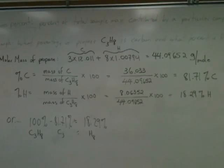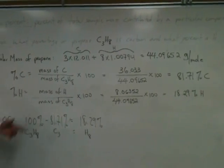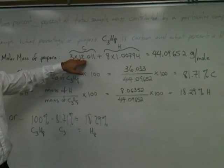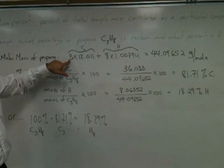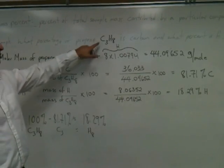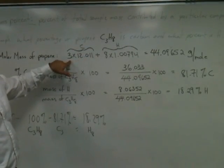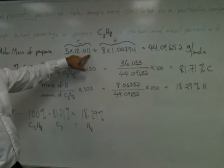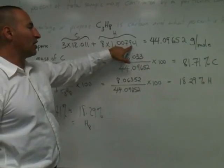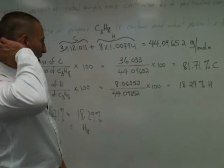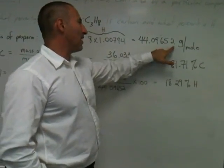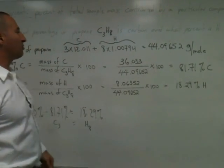First thing we have to do is find the molar mass of propane. We find that by multiplying the molecular mass of each atom by the number of atoms in the molecule. Propane has three carbon atoms, and each of them weighs 12.011 grams per mole. It also has eight hydrogen atoms. Each one weighs 1.00794 grams per mole. When you add up all those quantities, you get a molar mass of 44.09 for propane.